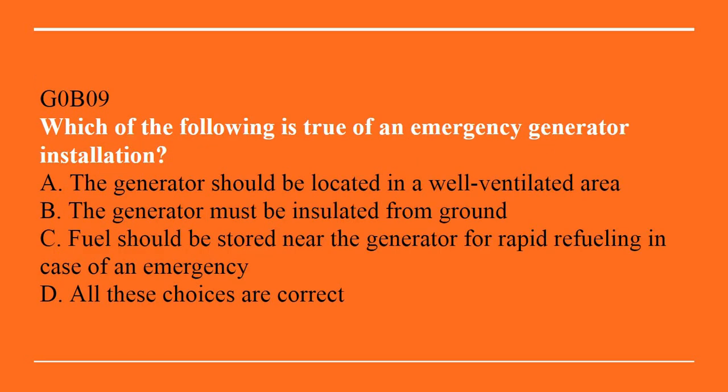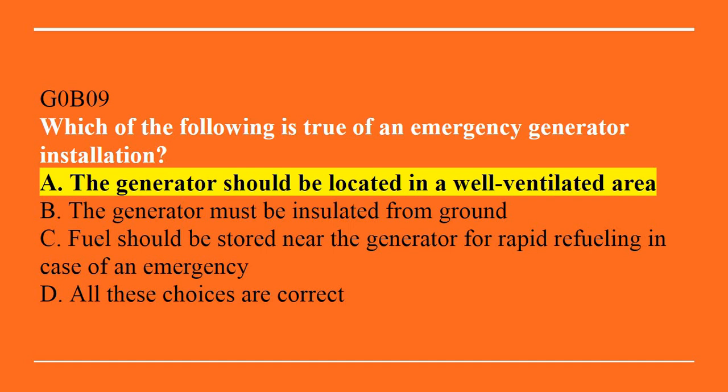G0B09: Which of the following is true of an emergency generator installation? A, the generator should be located in a well-ventilated area. B, the generator must be insulated from ground. C, fuel should be stored near the generator for rapid refueling in case of an emergency. Or D, all of these choices are correct. Correct answer is A — the generator should be located in a well-ventilated area.